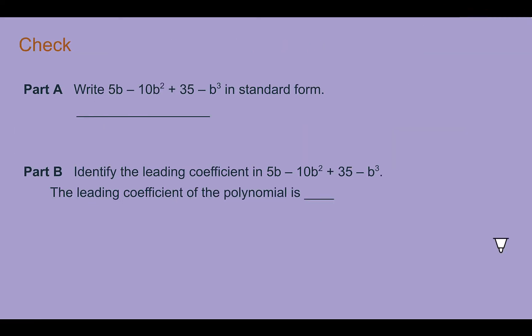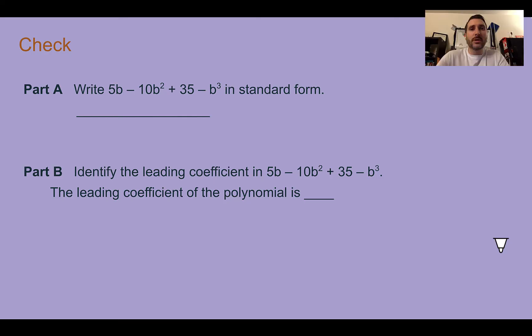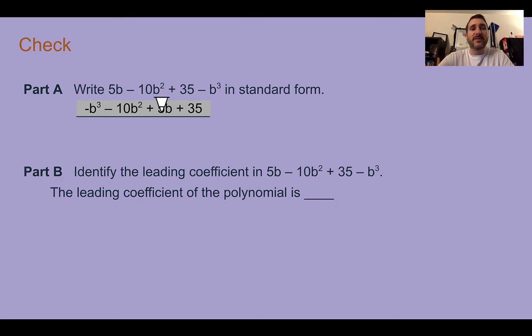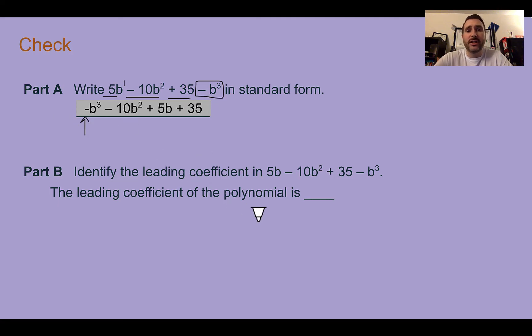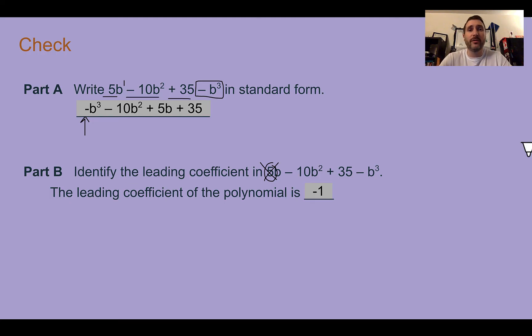Check your understanding: write the polynomial shown in standard form, then identify the leading coefficient. Pause the video now and complete the check. The answer in standard form is negative b cubed minus 10b squared plus 5b plus 35. Our leading coefficient is negative 1, because there's a negative sign with no number written in front. A common mistake is to use the number that is there to begin with without putting it in standard form first.